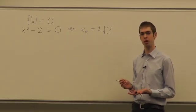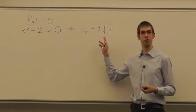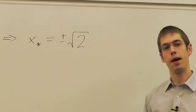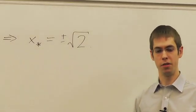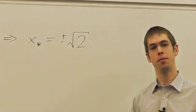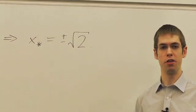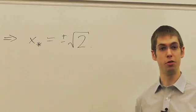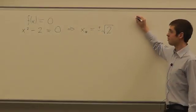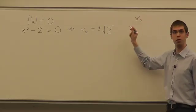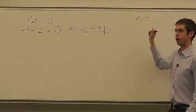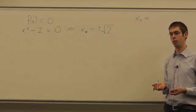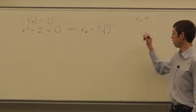I'm going to talk in particular about this example of finding the square root of 2 — just the positive square root. I'm going to talk about a kind of method called an iterative method, where the basic idea is instead of going directly to a solution, you take an initial guess. Our initial guess, which we'll call x naught — well, what would be a good guess? We know the square root of 2 is bigger than 1 and less than 2, so let's make it 1.5.